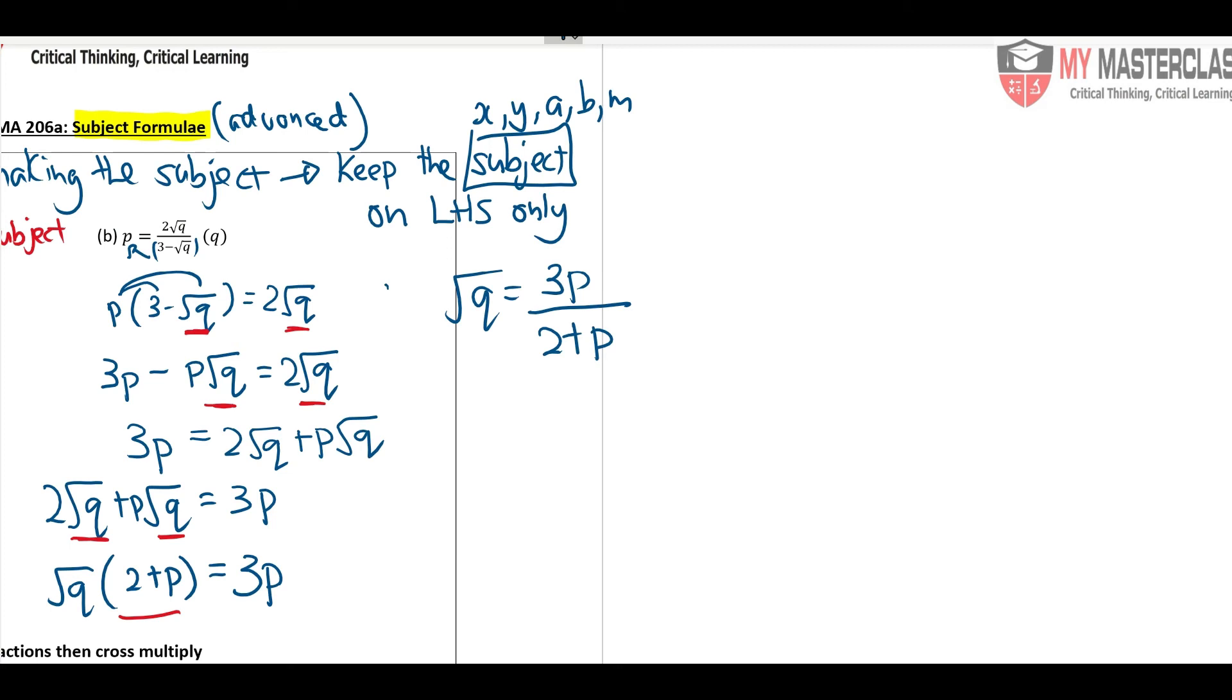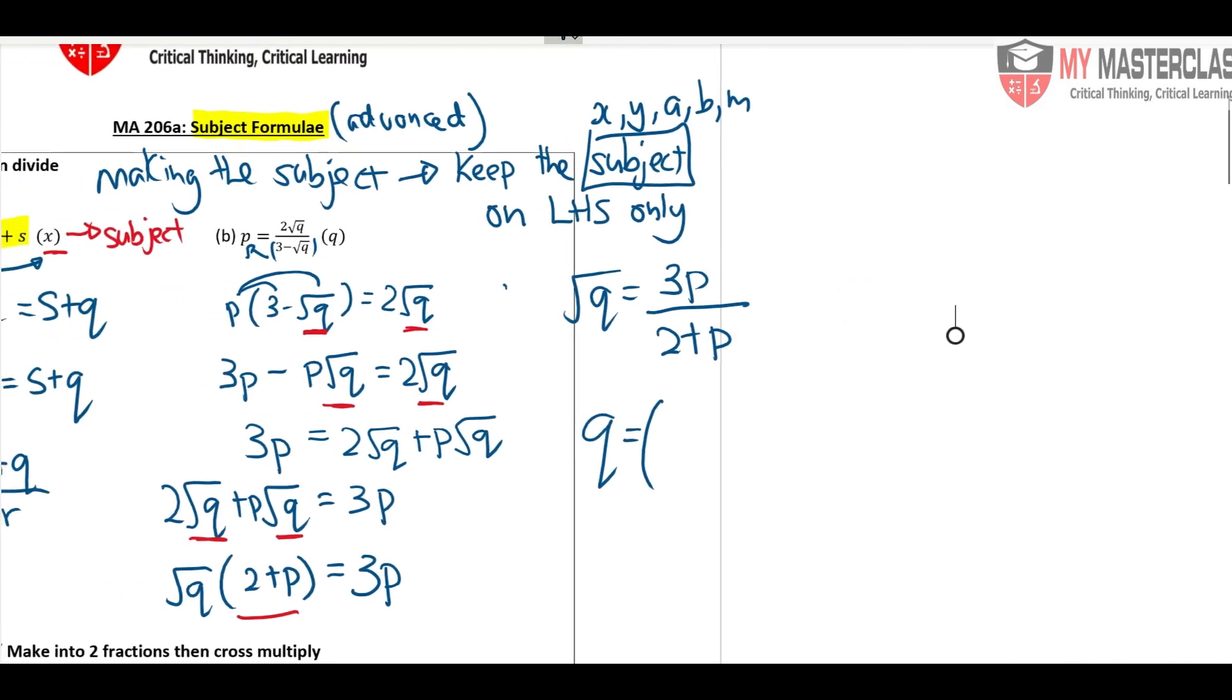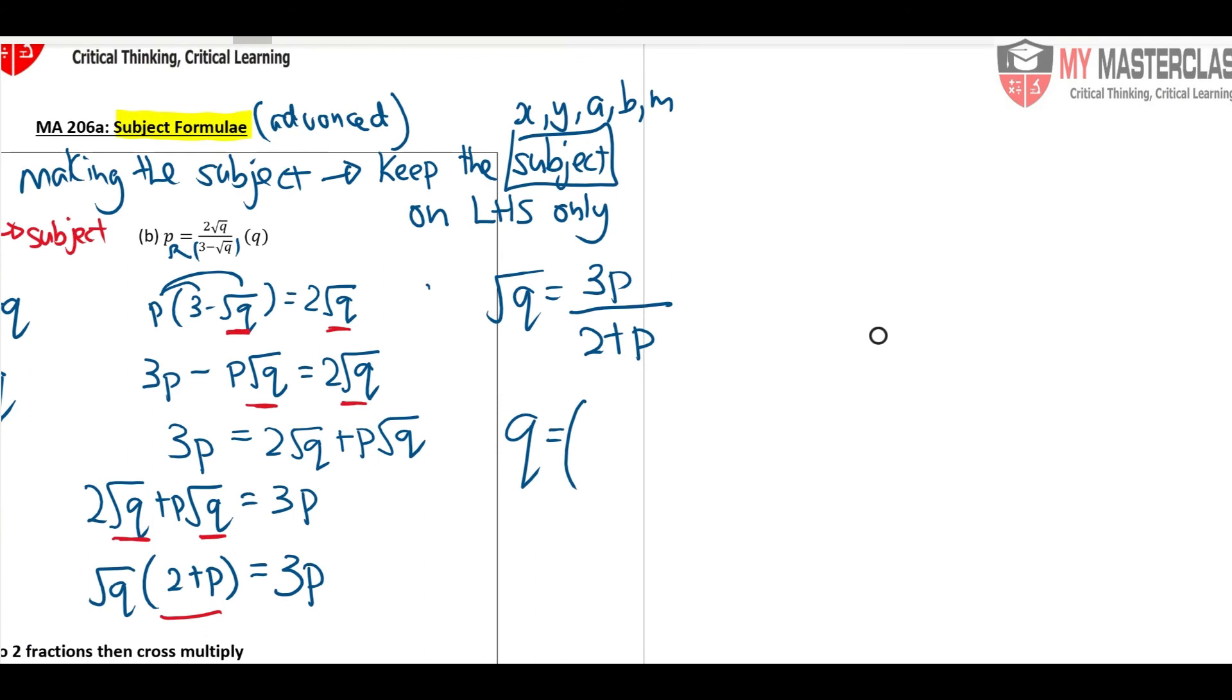So now if square root Q equals to this guy, how do I remove the square root? What do I do on the right side? You square it. Very good, well done. Okay, 3P over 2 plus P, square. Do you need to expand this square? No need, this is the final answer.